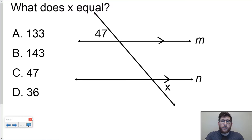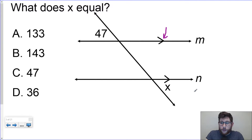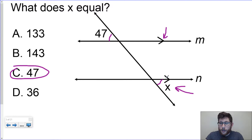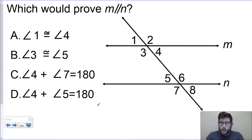Something you'll see really early on the SOL is parallel lines. Here's a basic problem — remember those little arrows mean we're talking about two sets of parallel lines. With parallel lines, angles are either equal or they add up to 180. These angles look equal to each other; they're both acute, so the answer is 47. If you get stuck, at least check: is it more than 90 or less than 90?